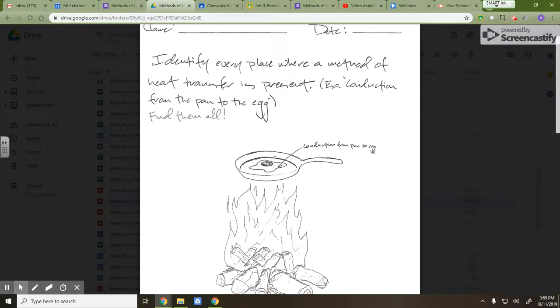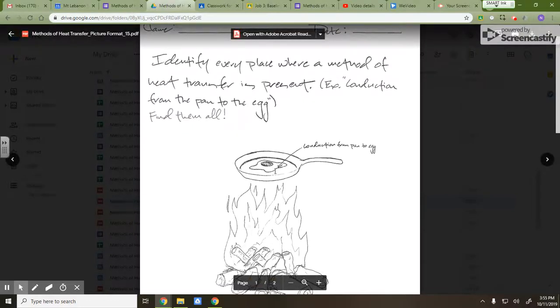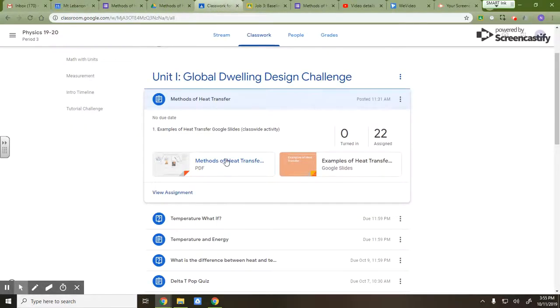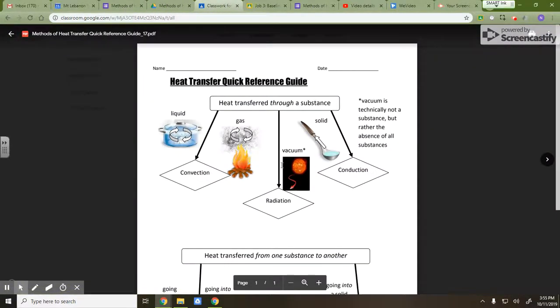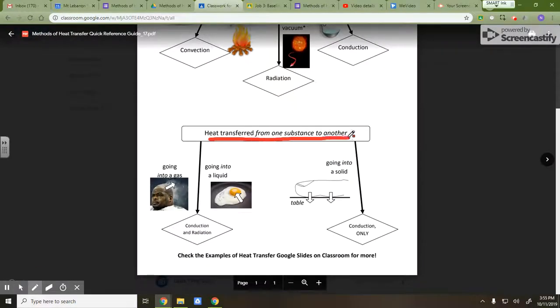How did I figure that out? Well, let's see here. We know heat is being transferred from the pan to the egg. And according to our little quick reference guide, cheat sheet, heat being transferred from one thing to another. Heat being transferred from one substance to another. Yeah, from pan to egg.